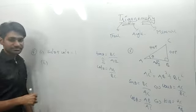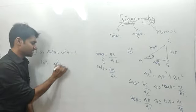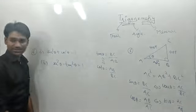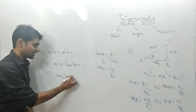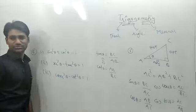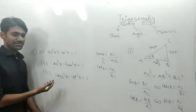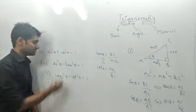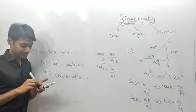The second identity is sec²θ − tan²θ = 1. The third identity is cosec²θ − cot²θ = 1. All these identities should be known — they come from the 10th standard.